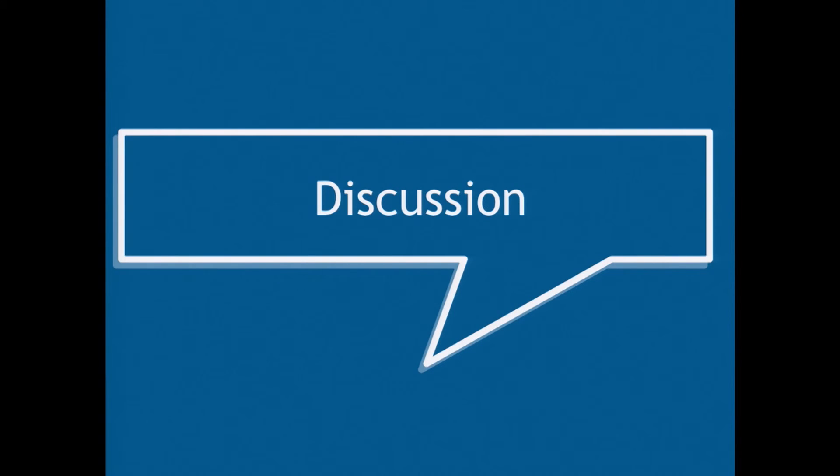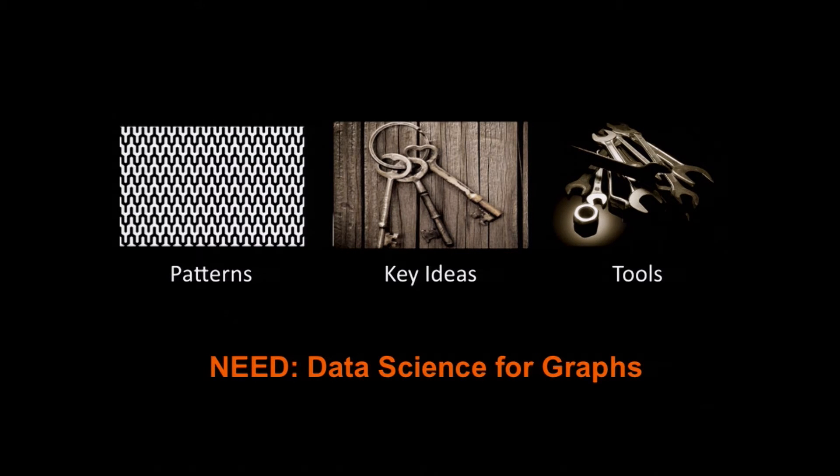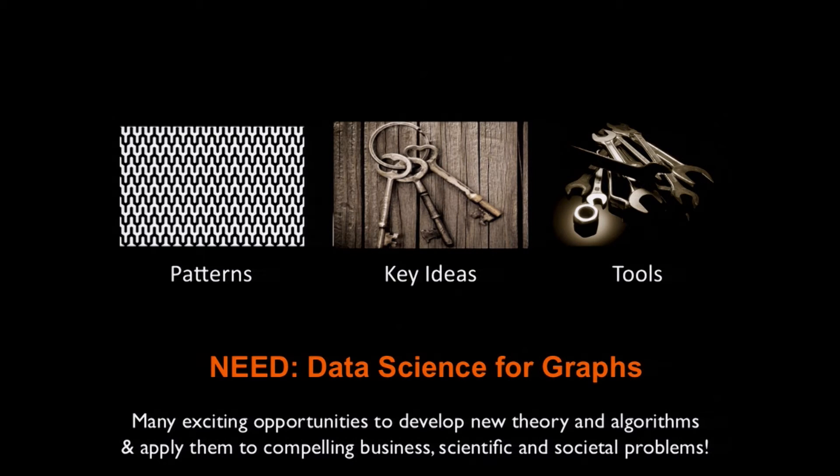To summarize: we can agree we're drowning in big data, and hopefully we can agree that a lot of that data is highly relational. We really need methods that question old assumptions about independence, construct richer models still parameterized in a reasonable way, and deal with bias, noise, and privacy in the data. There are a lot of exciting opportunities for new theory and algorithms in this space, and tons of interesting applications in industry, science, and societal problems.